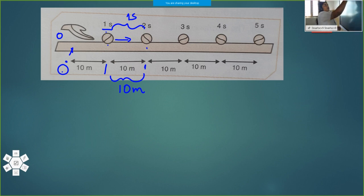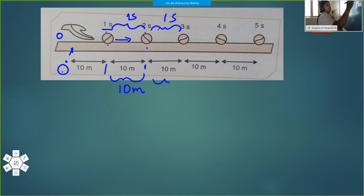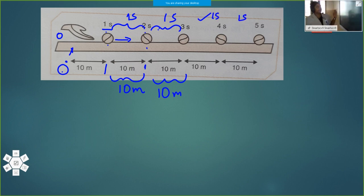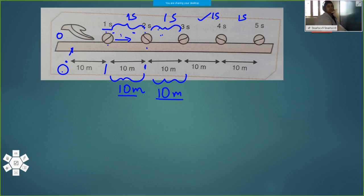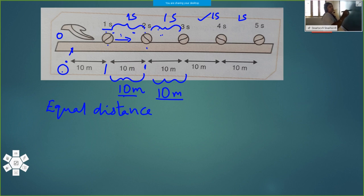When we observe the ball from two seconds to three seconds, the time interval is again one second, and the ball has traveled ten meters. So here also one second, one second. In equal time intervals of one second, the ball has traveled ten meters each time. It covers equal distance in equal intervals of time.